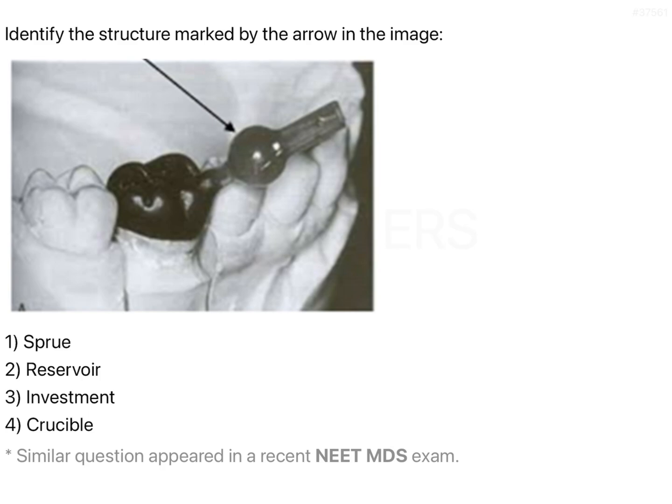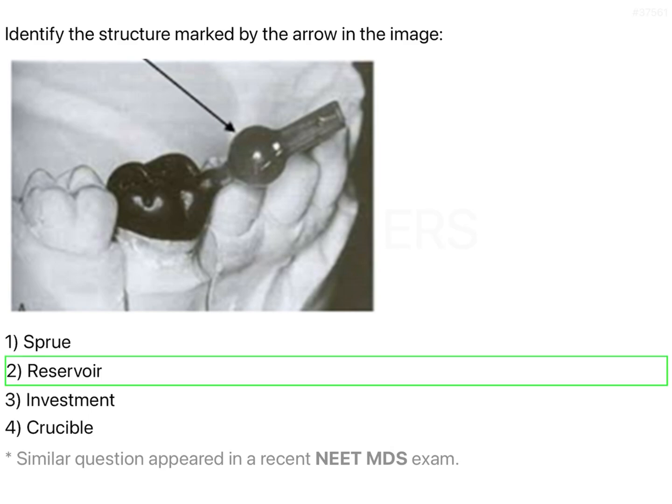In addition to that, the globular structure you see here is what is called the reservoir. This reservoir is actually a very important part of the entire sprue former. The entire attached structure — this is what is called your sprue former. It has the neck, it has the attachment apparatus, and it has the reservoir.